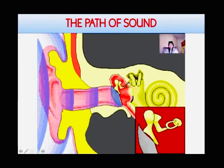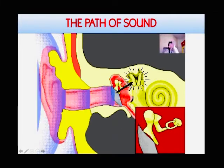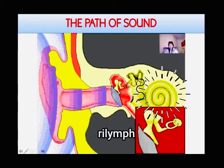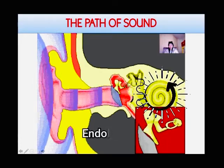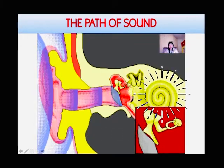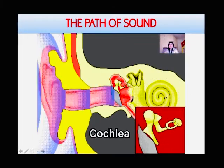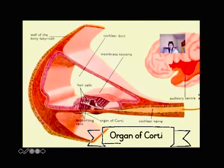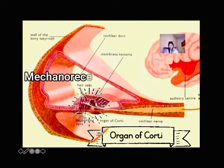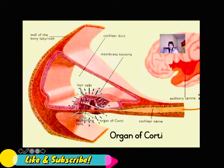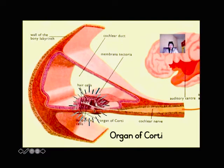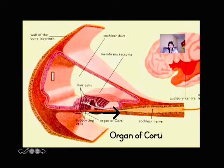The oval window starts to vibrate and causes wave movements in the liquid of the perilymph. The wave movements are then transferred to the endolymph inside the cochlea. Now inside the cochlea we have the organ of Corti. The hair cells of the organ of Corti are the mechanoreceptors. They are going to brush or bend against the membranes, which converts the mechanical stimulus of the sound waves into an impulse.